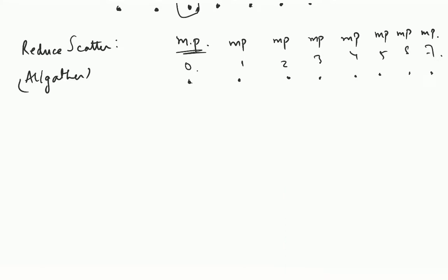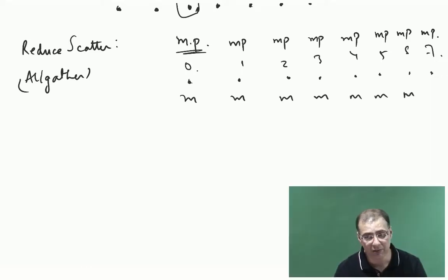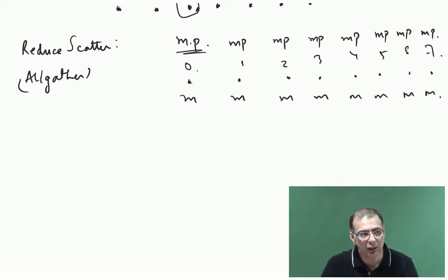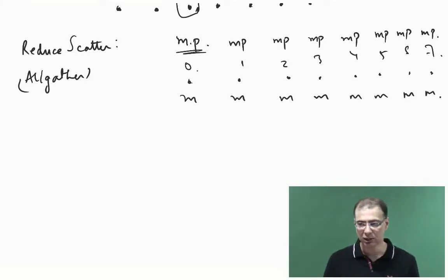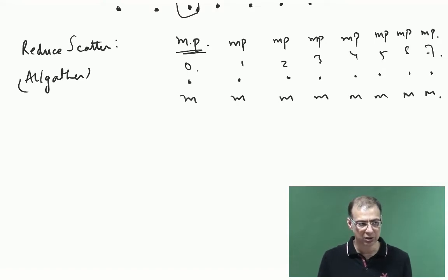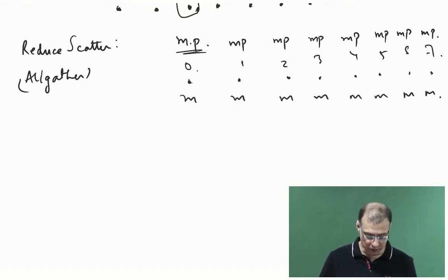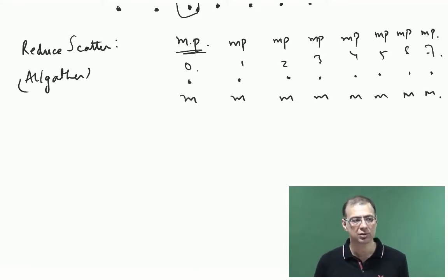What does it mean to be scattered? It means that the sum of the first M elements should be on node 0, the sum of the next M elements should be on node 1, and so on. So initially everybody had MP elements and you want to do element-wise summation. The final result is going to be of size MP and that is going to be scattered across the P nodes, so each node will have M elements.